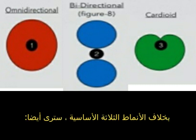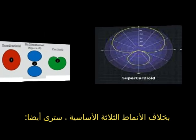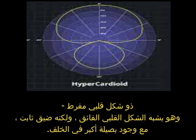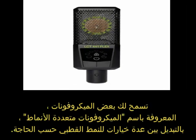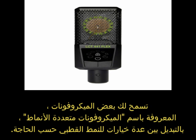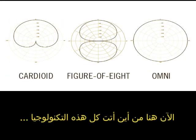Beyond the three basic patterns, you also have super cardioid, which is like cardioid but narrower with a small bulb of rear sensitivity, and hyper cardioid, which is like super cardioid but narrower still and with a larger bulb in the rear. Some mics, known as multi-pattern mics, allow you to switch between several polar pattern options as needed.